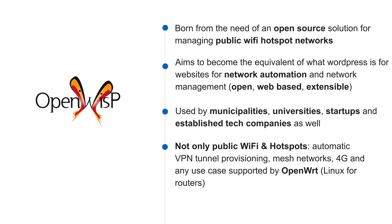Nowadays OpenWisp is widely used for automatic provisioning of VPN tunnels like OpenVPN and WireGuard, mesh networks, and 4G deployments in which there is a router with a 4G uplink. It supports any use case supported by OpenWRT, which is a Linux distribution used for routers. So whatever OpenWRT can do, OpenWisp can support, deploy, and manage — including thousands of routers with the same configuration, monitoring, config updates, and firmware updates.